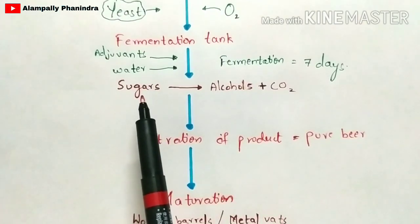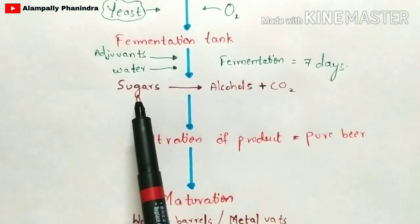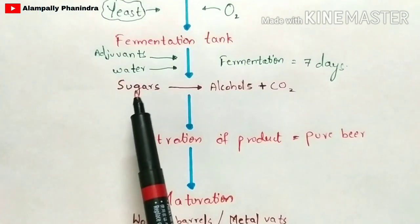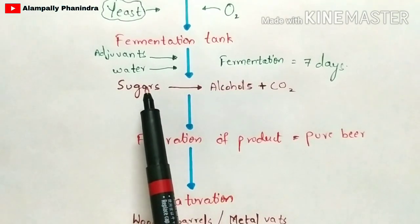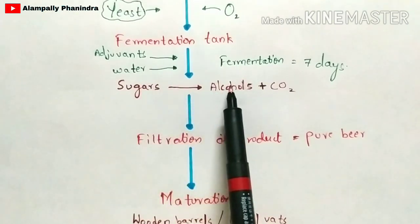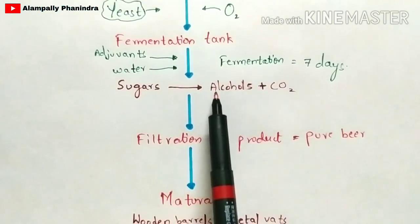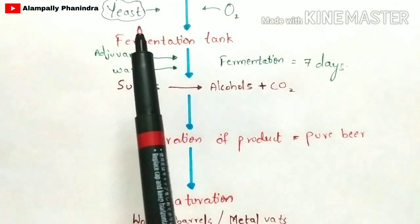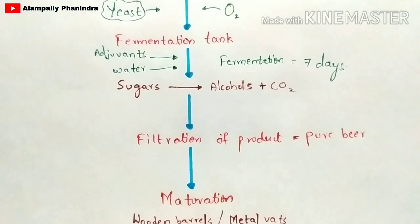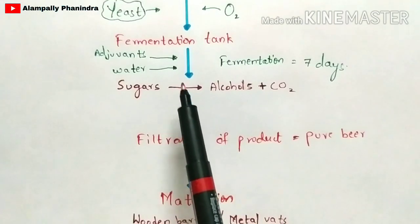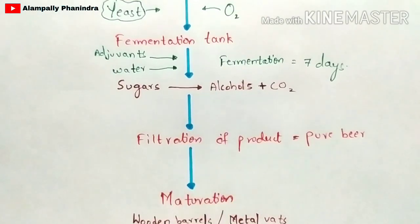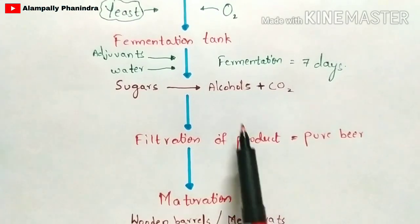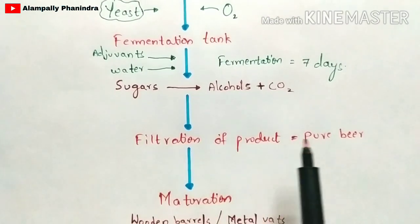Yeast plays a major and vital role by converting sugars into alcohols as well as carbon dioxide. The wort contains sugars because barley consists of carbohydrates. Those sugars get converted into alcohols along with carbon dioxide by the action of yeast. The secondary metabolite — beer — is obtained from the fermentation tank, and it then undergoes filtration to obtain pure beer.